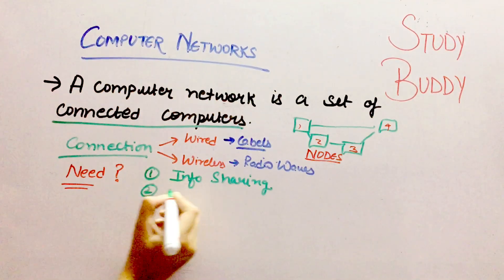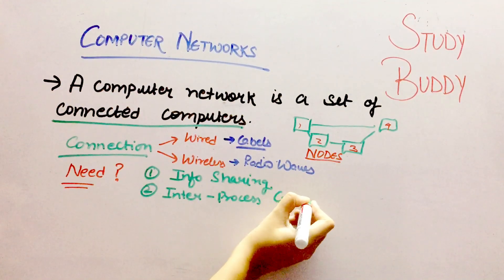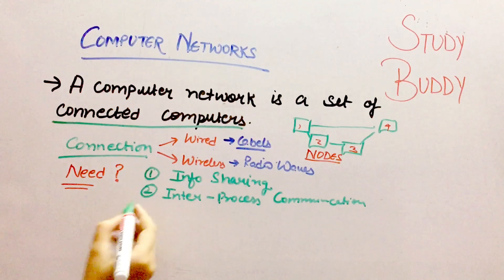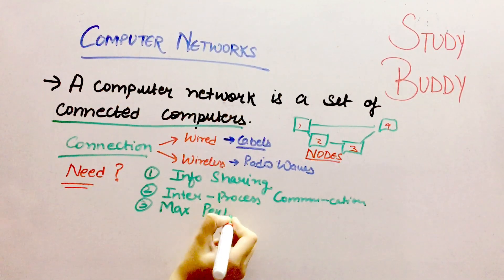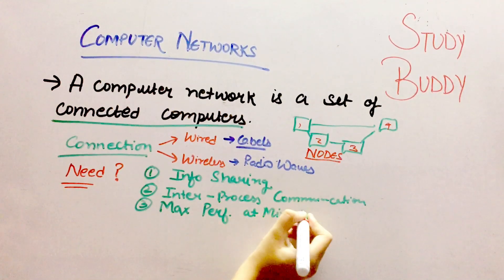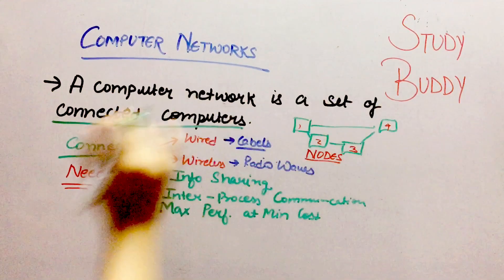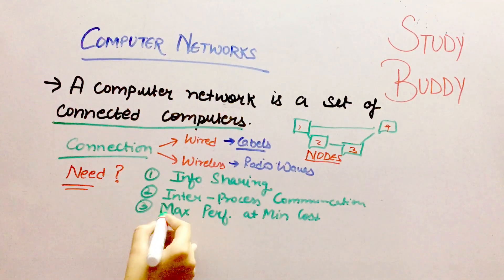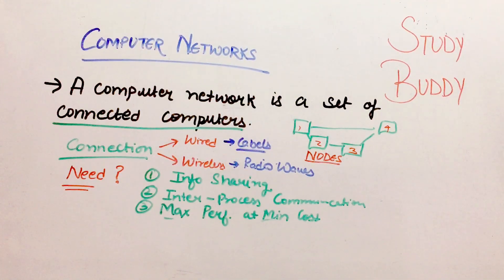The second reason is inter-process communication of users. The third one is to provide maximum performance at minimum cost. When your work is divided among many computers, your work is done quickly and with good performance. And that is also at minimum cost, because you mainly only have the cabling cost to connect computers, which is not much.